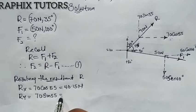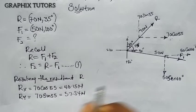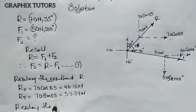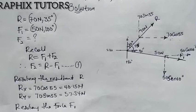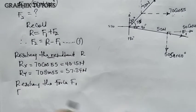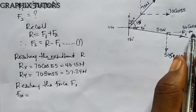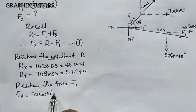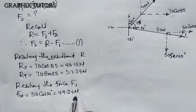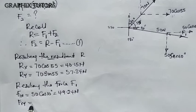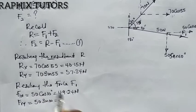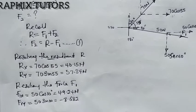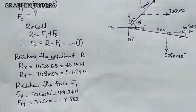Now resolving force F1: F1x along the x-axis gives 50 cos 10 degrees, which equals 49.24 newton. F1y along the y-axis gives 50 sin 10, which equals minus 8.682 newton. It is negative because the force is facing downward.